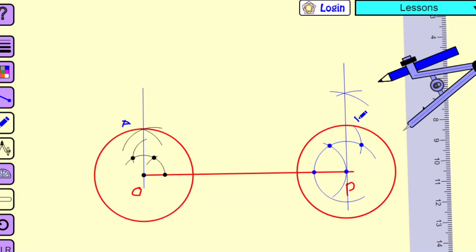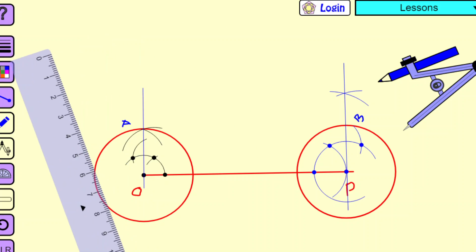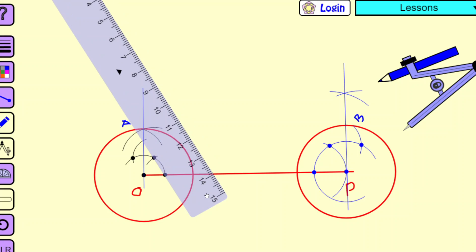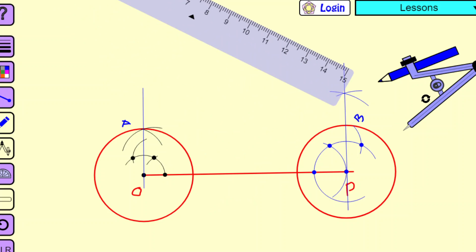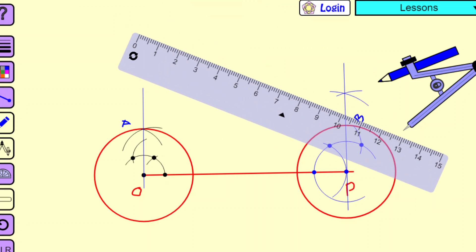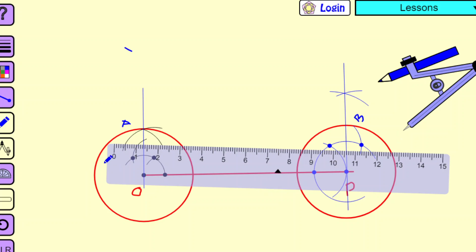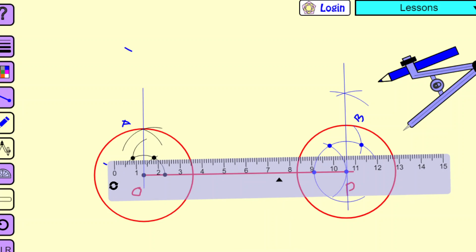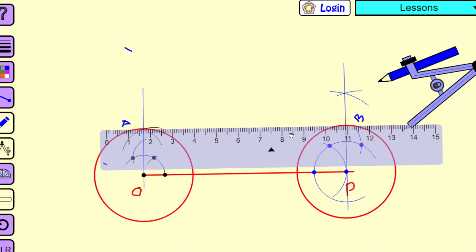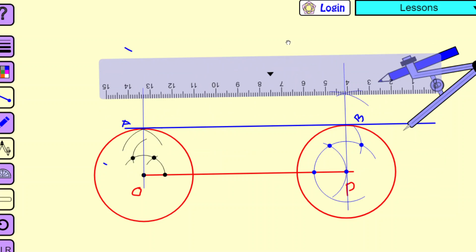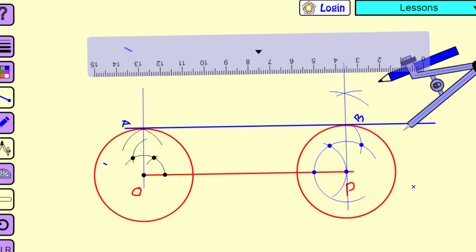Now you connect AB. This AB is nothing but the common tangent. So the AB I have connected here, this AB is a common tangent. Very simple.